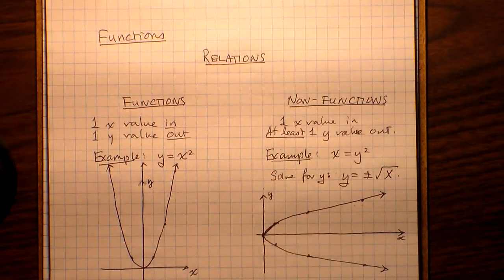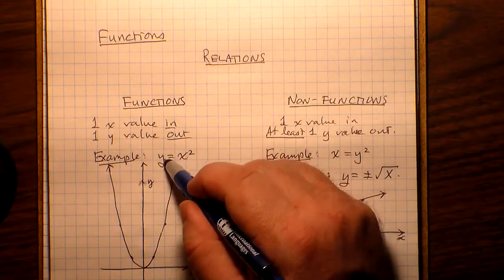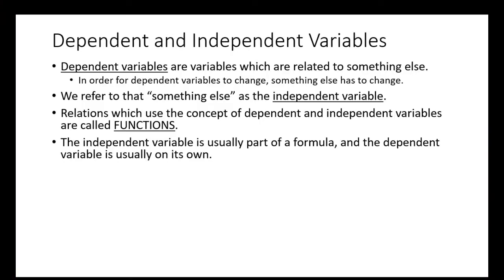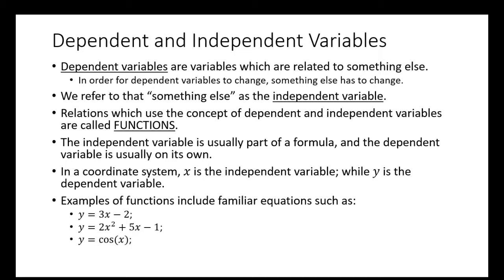The independent variable is usually part of a formula, and the dependent variable is usually on its own. In a coordinate system, x is the independent variable while y is the dependent variable. Examples of such functions include familiar equations such as y = 3x - 2, y = 2x² + 5x - 1, y = cos(x), or y = ∛(2x - 9) + 1.